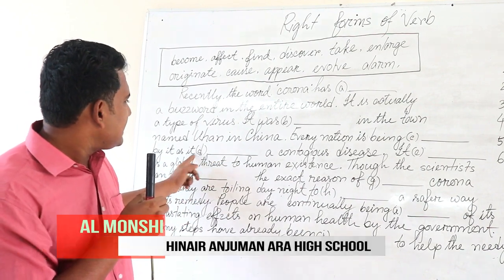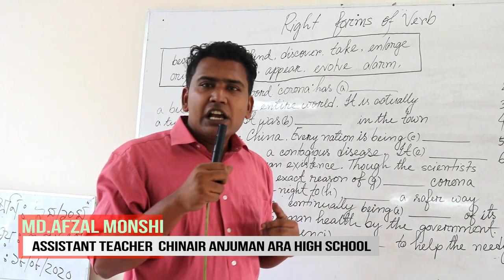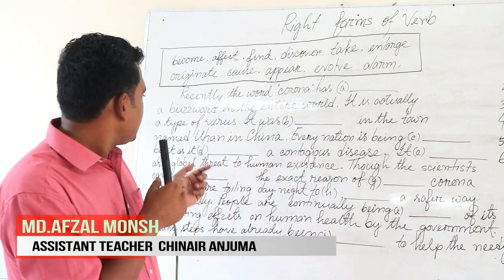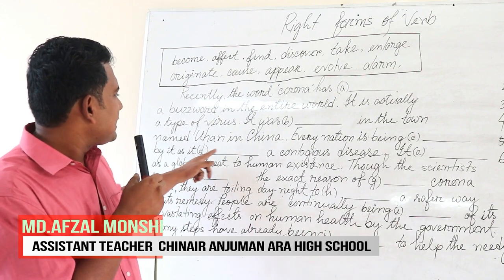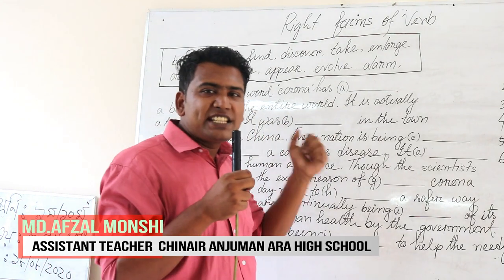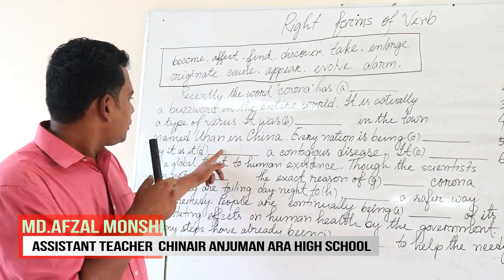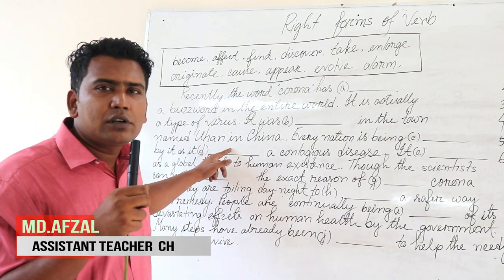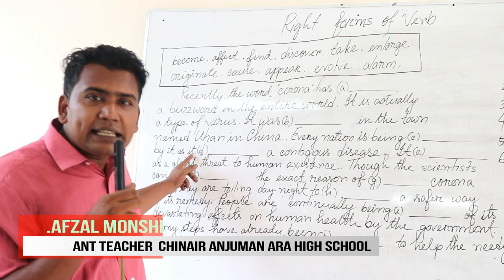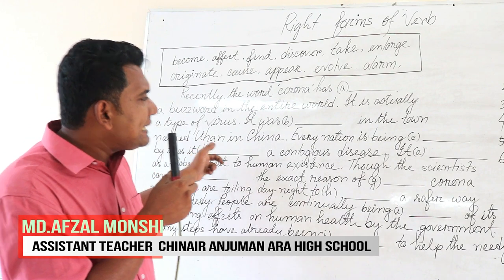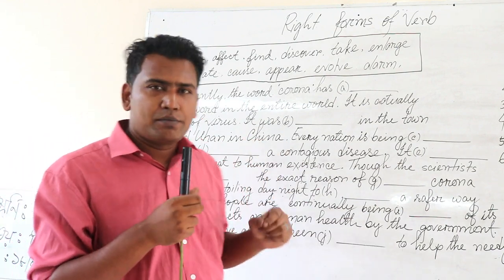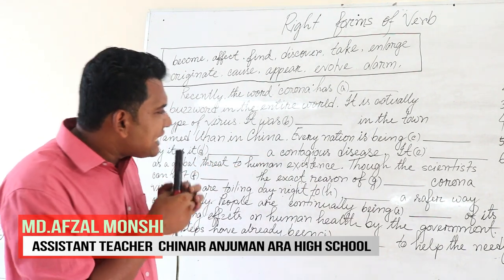'As it dashed a contagious disease' — contagious means a type of disease which spreads through human touch. So here we use 'causes'. Cause means to be the reason of happenings. Do you know why 'S' is added to 'cause'? Because the subject 'it' is a third person singular number. As it is present indefinite tense, you have to add S to the main verb — that makes 'causes'. A contagious disease.